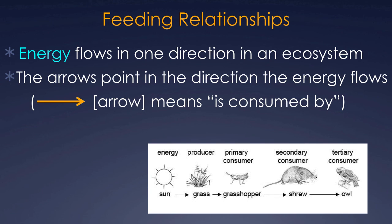The next thing we're going to talk about are feeding relationships — basically who's eating who. We show feeding relationships with arrows, and you've probably heard of them as food chains and food webs. Energy flows in one direction in an ecosystem — from what is being eaten to what is doing the eating. So energy goes from the prey into the predator, and arrows point in the direction that energy flows.